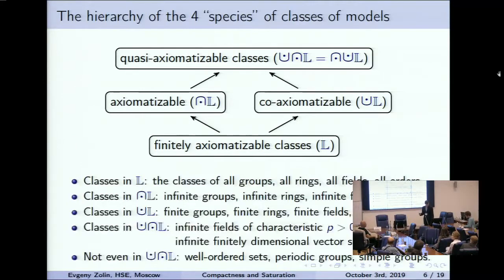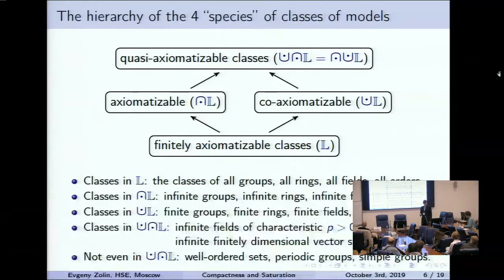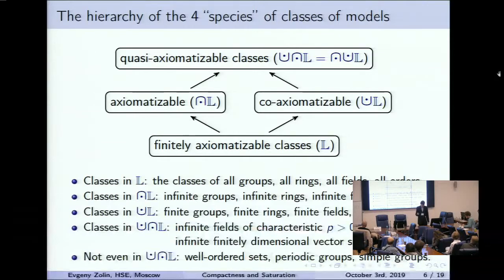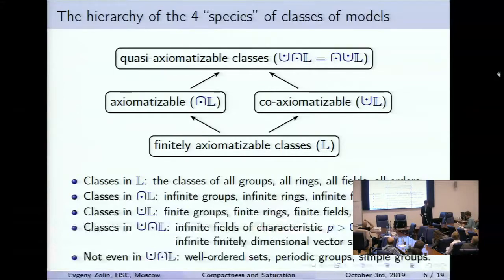Here are examples: the class of all groups is finitely axiomatizable; the class of all infinite groups is axiomatizable but not finitely; the class of finite groups is coaxiomatizable — it is the union of finitely axiomatizable classes. There are classes belonging to the upper species but not to the lower ones, for example infinite-dimensional vector spaces. And there are classes that do not belong to this hierarchy at all, for example well-ordered sets.